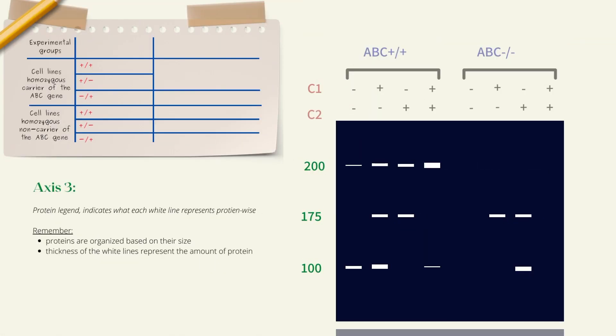Axis number three, the protein legend. This tells the readers what each line means protein-wise. It's essentially a legend that's created in reference to a protein database, a dictionary where each protein has its respective weights stated. For now, I have written numbers, but later on I'll specify what protein each horizontal axis means. Don't forget that the thickness of white lines is also an indicator of the protein levels, high or low, thick or thin.